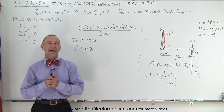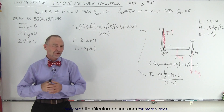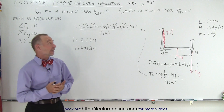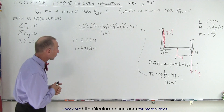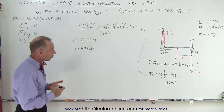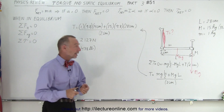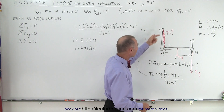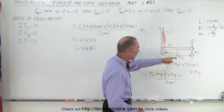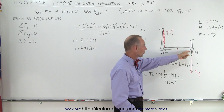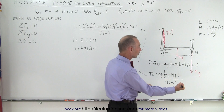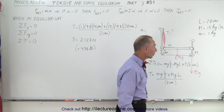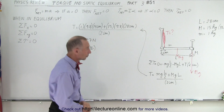Welcome. Here's our next typical example for static equilibrium types of problems, and in this case we're using human anatomy. Here we have the bones of the arm, here we have the bicep, and notice we're holding a weight with a mass of 15 kilograms or 33 pounds.